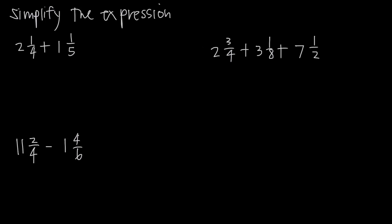In this video, we're talking about addition and subtraction of mixed numbers. A mixed number is a whole number plus a fraction. So when I say 2 and 1/4, that's a mixed number and it means 2 plus 1/4. When dealing with addition and subtraction of mixed numbers, we want to add or subtract the whole numbers together, then separately add or subtract the fractions, and then combine the two.